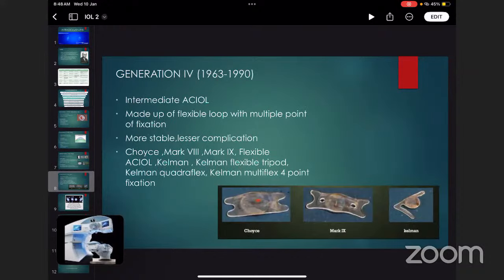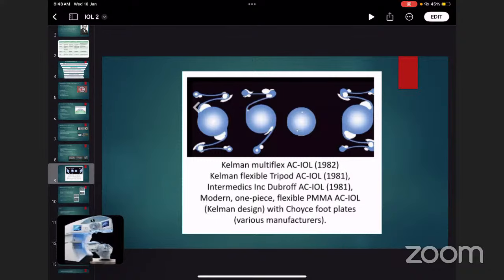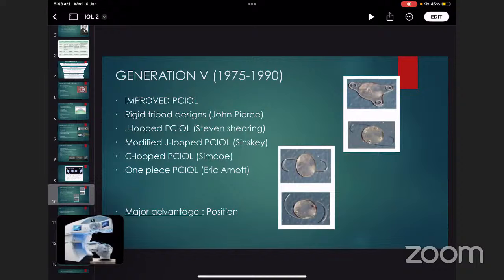Generation 4th, from 1963 to 1990, was intermediate anterior chamber IOL, improvised AC IOL made of flexible loop with multiple points of flexion. It was more stable with lesser complications. Examples were Choyce Mark 9, Kelman Multi-Flex, Kelman Flexible Tripod, and Intermedics Dubroff Modern One Piece Flexible. Nowadays, sometimes we use Kelman Multi-Flex AC IOL.